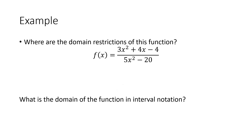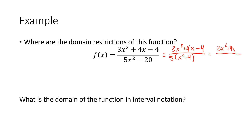Let's look at an example. The function is f(x) equals 3x squared plus 4x minus 4 in the numerator, divided by 5x squared minus 20 in the denominator. We need to find where the denominator equals zero. We can factor out 5 from the denominator to get 5 times (x squared minus 4), and since that's a difference of perfect squares, we factor further to 5 times (x plus 2) times (x minus 2).